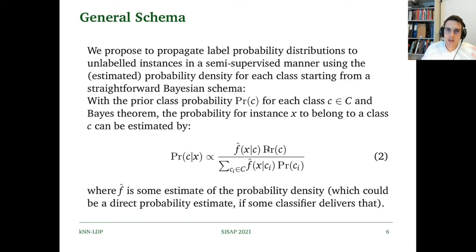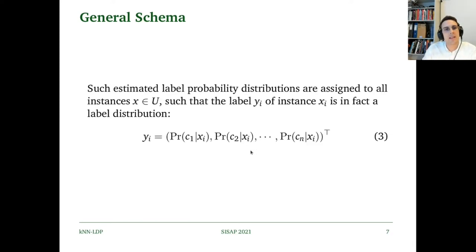All points in U receive such a label distribution instead of a crisp label. Notice that the user can derive a crisp labeling at will by taking the maximum of the vector Y_i. We have one conditional probability for each of the classes within.